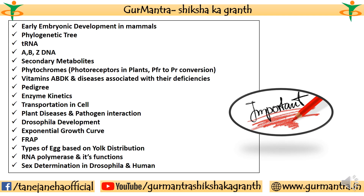Afterwards, then developmental biology, that is your unit number 5, main se jo hai, early embryonic development in mammals, like jab hum stages pardhate hain, morula, blastula, gastrula, neurulation, us mein jo hai, inner cell mass, ICM ko lekar ek question tha, jis mein us ki potency ke baare mein woh poochha gaya tha.